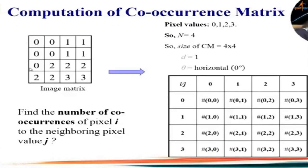Now we will take one example. We generate the co-occurrence matrix of a 4 by 4 image. In this image there are gray levels 0, 1, 2, and 3 — so n equals 4, meaning the number of gray levels is 4. Therefore we generate a co-occurrence matrix of size 4 by 4.